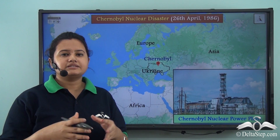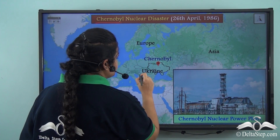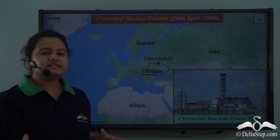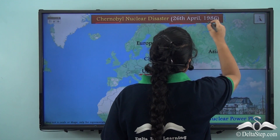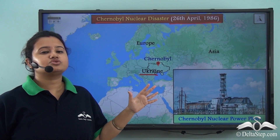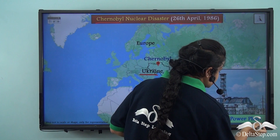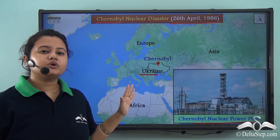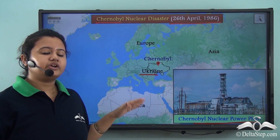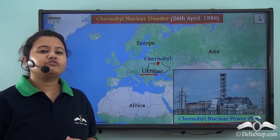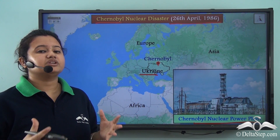Another man-made disaster took place in Chernobyl, which is situated in Ukraine, a European country. This nuclear disaster took place on 26th April 1986. The source of this disaster was a nuclear power plant situated in Chernobyl, which was responsible for generating electricity in Ukraine and many other Soviet Union states.